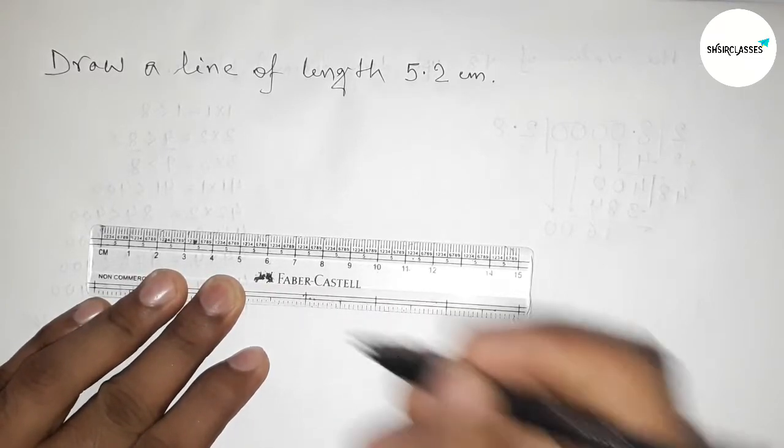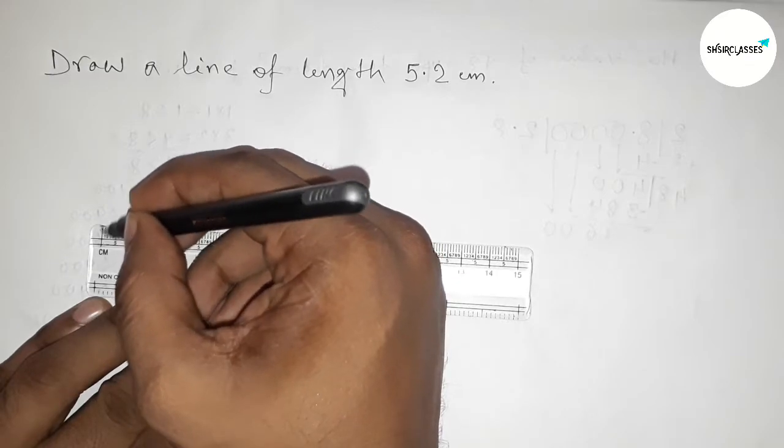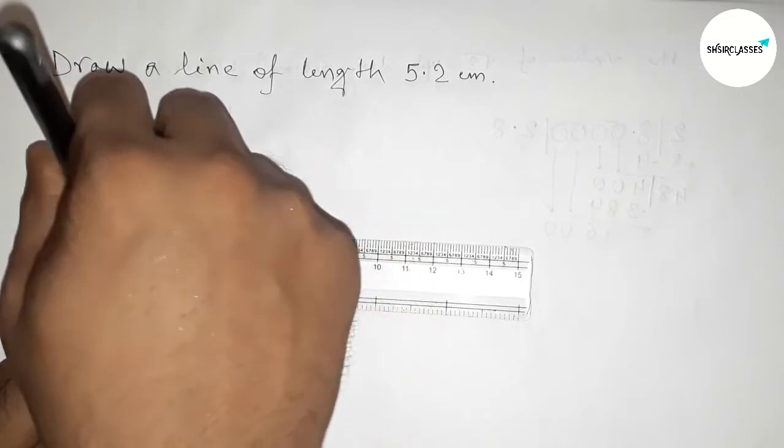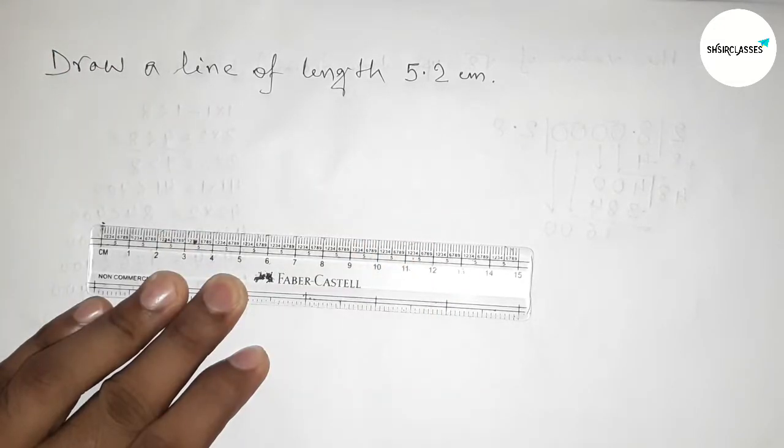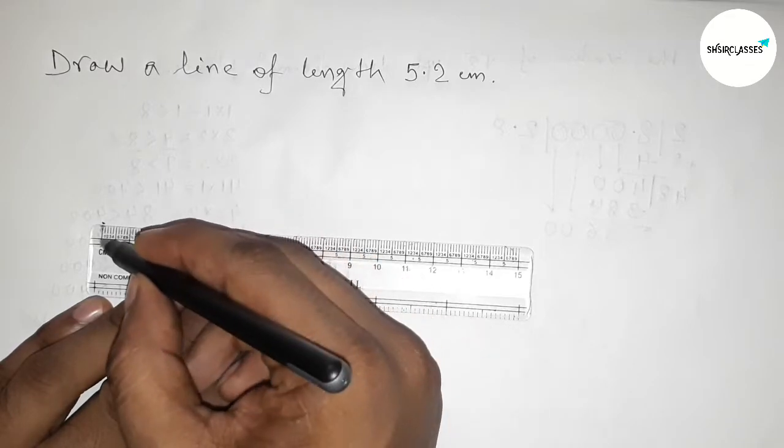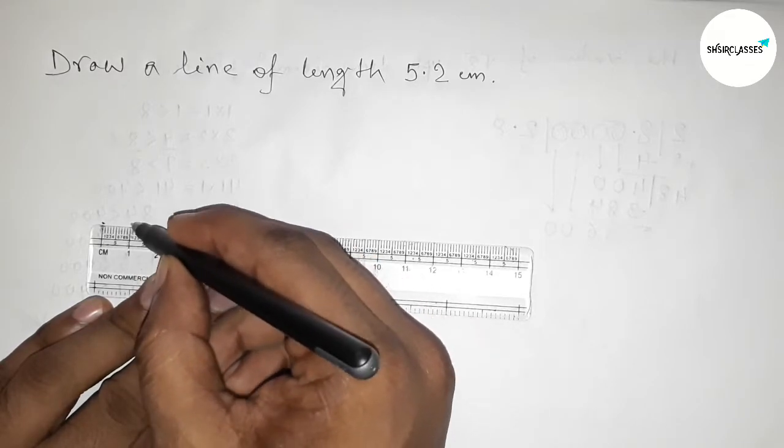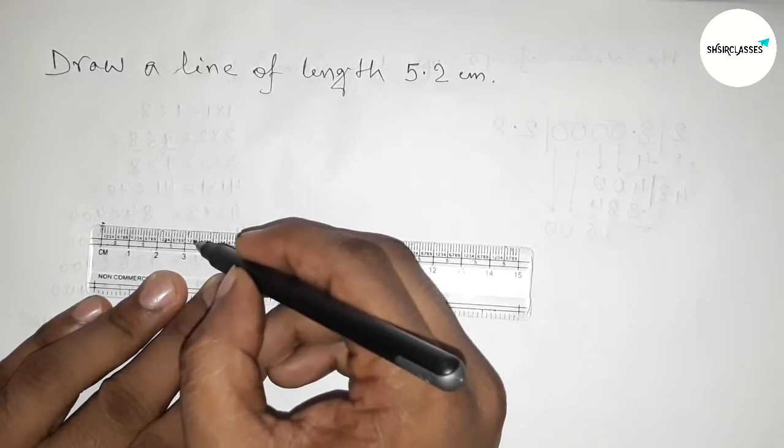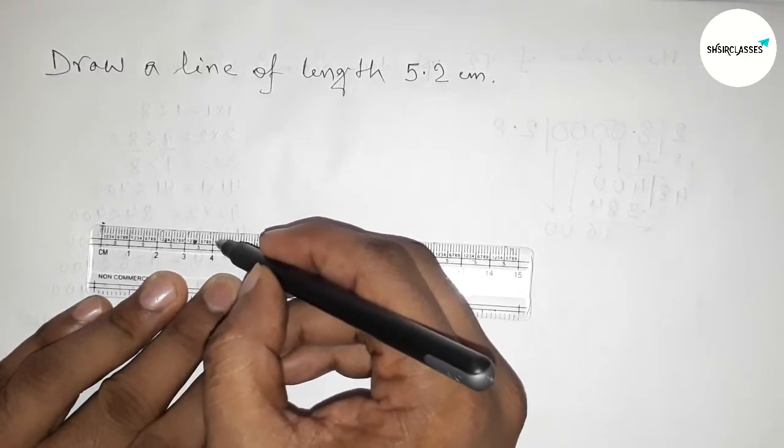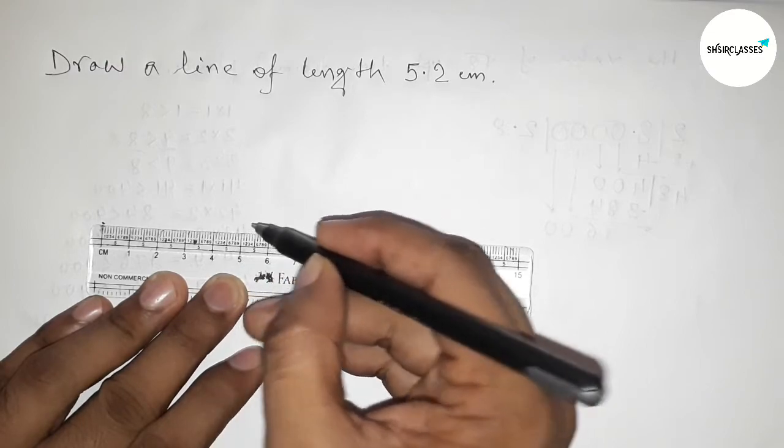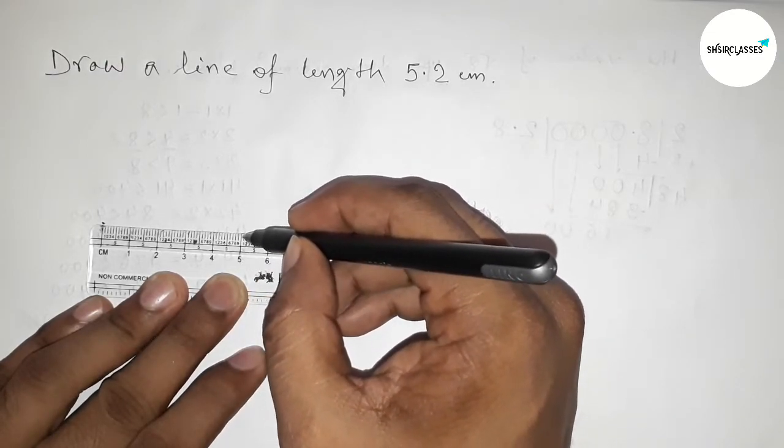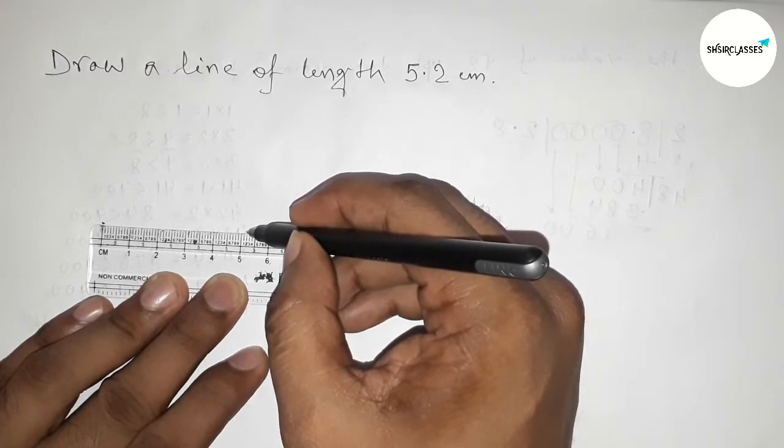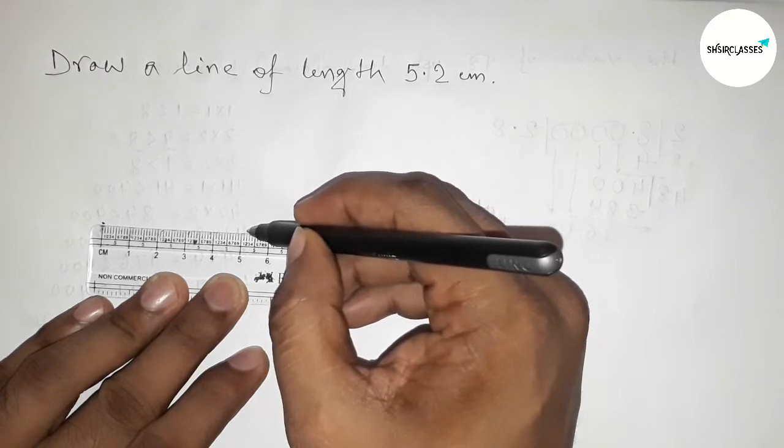Now counting 5.2 centimeter. This is starting zero, so first pointing this here at zero. Now counting 5.2 centimeter. This is zero, one centimeter, this is two centimeter, three centimeter, this is four centimeter, and this is five centimeter and five point one, two. So this is five point two centimeter. So first marking here five point two centimeter.